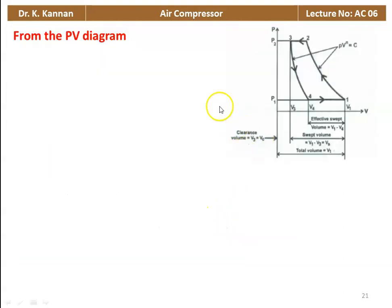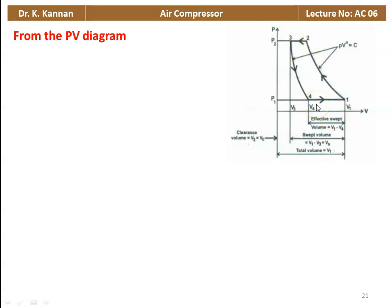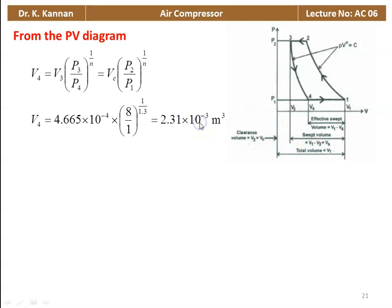This is the PV diagram for a single-stage compressor with the clearance volume. V1 to V2 is the compression process, 2 to 3 is the delivery process, 3 to 4 is expansion, and 4 to 1 is the suction — the effective volume of air drawn inside.